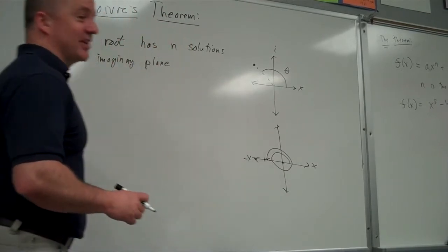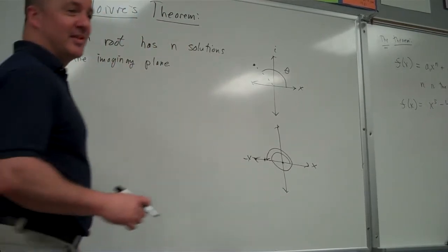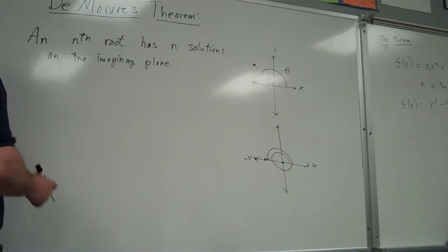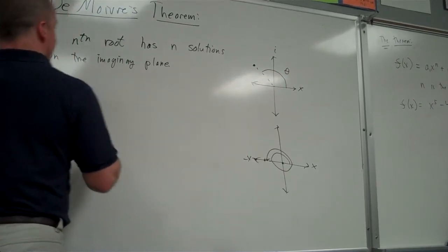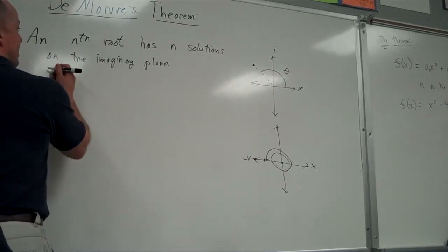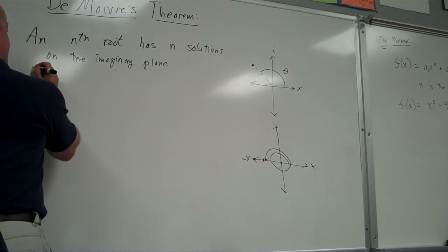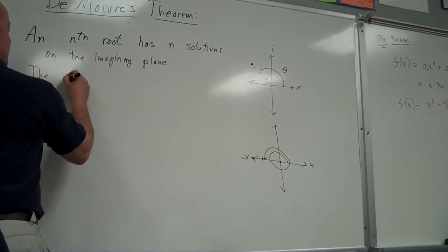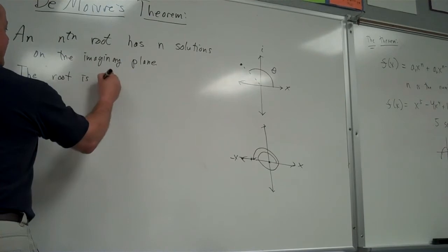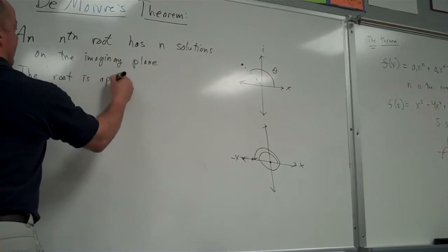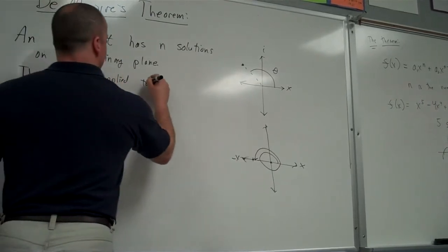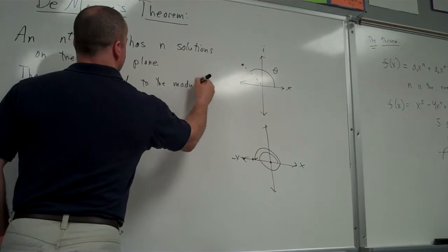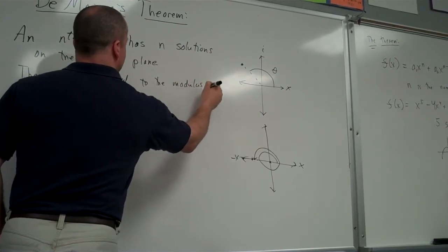I should be saying the complex plane — that's a great point. On the complex plane, it has n solutions always. The root is applied to the modulus, which is the distance of the radius.